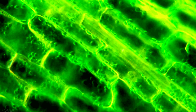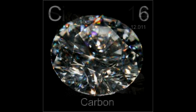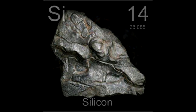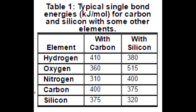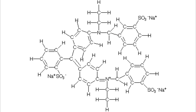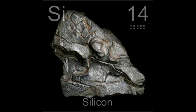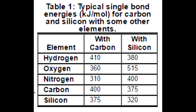The answer is complicated. While silicon is definitely the best pick when you have no carbon, silicon still has a few problems. First of all, silicon-silicon bonds are weak compared to carbon-carbon bonds, meaning complex silicon-based molecules would be much harder to make. Secondly, and this is probably silicon's biggest flaw, silicon-oxygen bonds are almost one and a half times stronger than carbon-oxygen bonds.